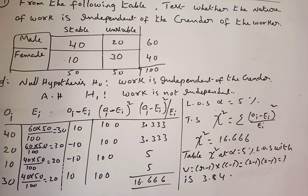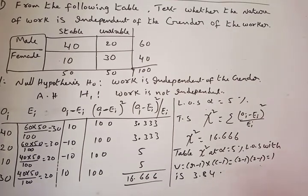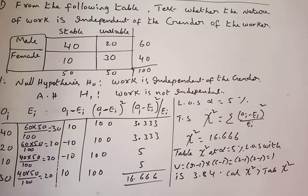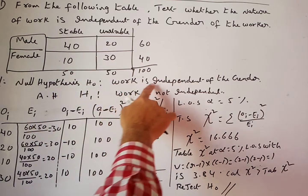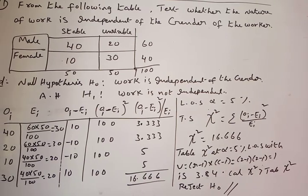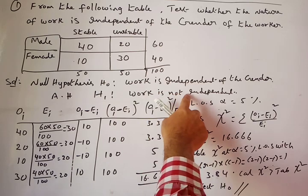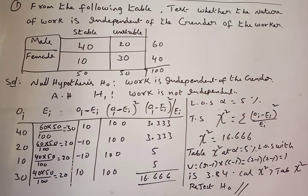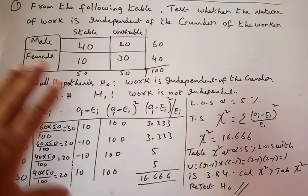Since calculated χ² (16.66) is greater than table χ² (3.84), we reject H₀. We accept the alternative hypothesis H₁: work is not independent of gender. This means work depends on the gender of the worker.